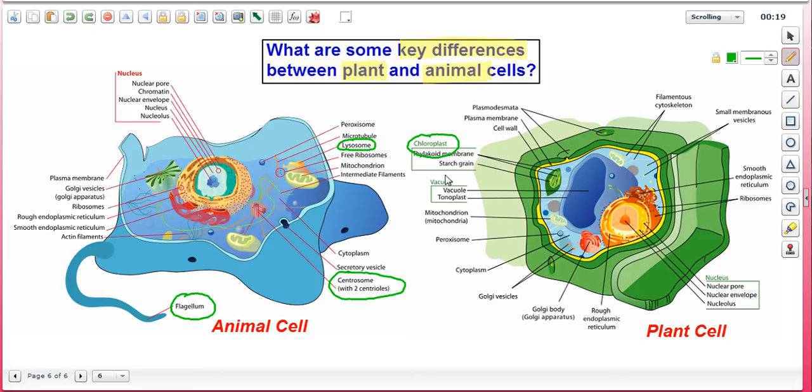Moving down the list, we see a vacuole, and it's huge in a plant cell. That's not the case in an animal cell, even though the animal cell will have small vacuoles. Finally, the cell wall. You will find cell walls in plant cells but not in animal cells.